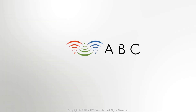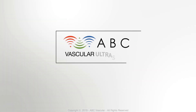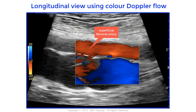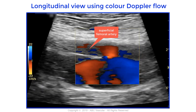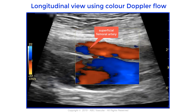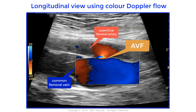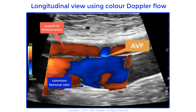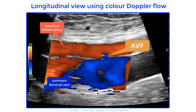Welcome to this ABC Vascular Ultrasound case study: the iatrogenic arteriovenous fistula between the superficial femoral artery and the common femoral vein. In this longitudinal view using color Doppler flow, you can visualize the superficial femoral artery anteriorly to the common femoral vein, and a communication between these two vessels via an arteriovenous fistula.